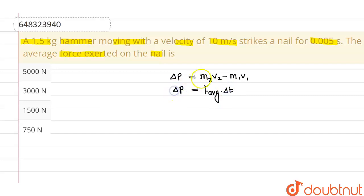Now, since finally the hammer comes to rest, that means m₂v₂ will be zero and overall we will be having m₁v₁ only. So mass is 1.5 kg into velocity is 10 meters per second.